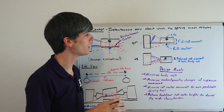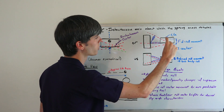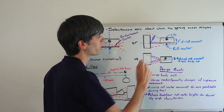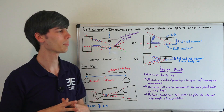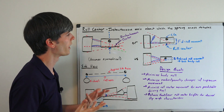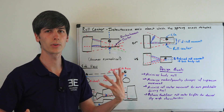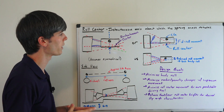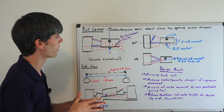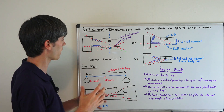So if you can decrease the distance between the roll center and the center of gravity, then you can decrease the amount of roll, and therefore decrease the amount of geometry change in the suspension, giving you better handling.